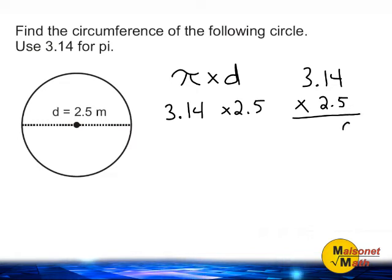Starting off with the number 5, 5 times 4 is 20, carry our 2. 5 times 1 is 5, plus 2 is 7, and 5 times 3 is 15.